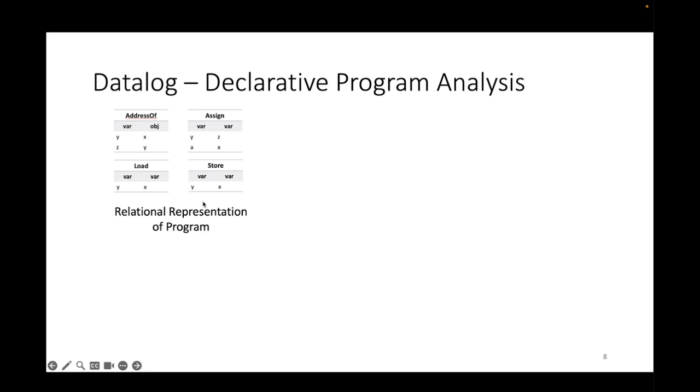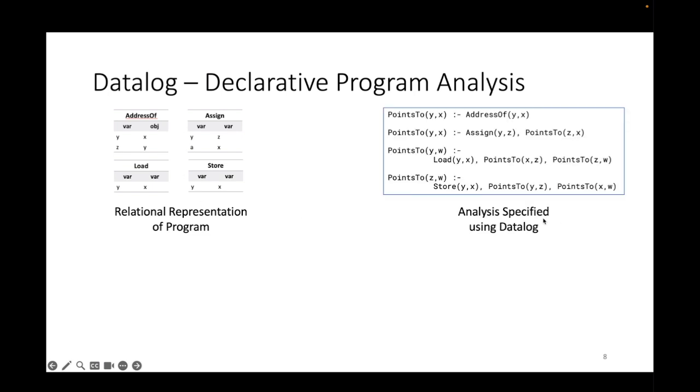Then once we have this relational representation of the program, we write the corresponding analysis logic we want to perform using Datalog. This is for a simple points-to analysis that computes which variables would point to what objects. Once we have this analysis specified using Datalog, we can use a Datalog engine to compute the output - in this case it will compute the points-to relation which contains the output of the analysis we want to compute.